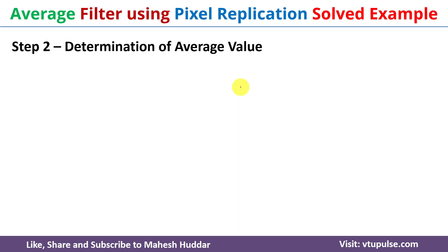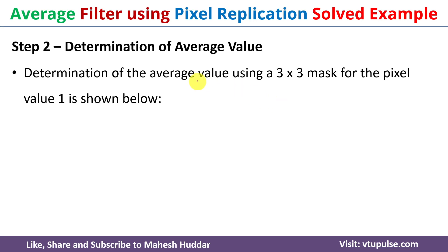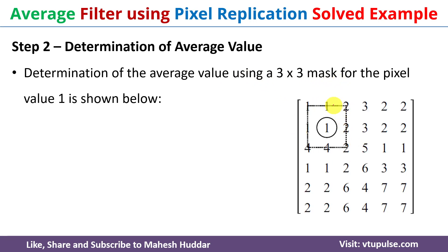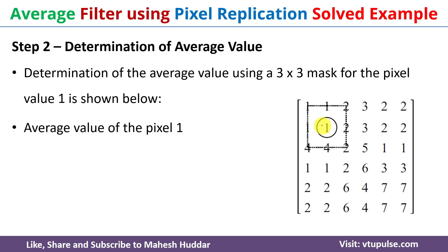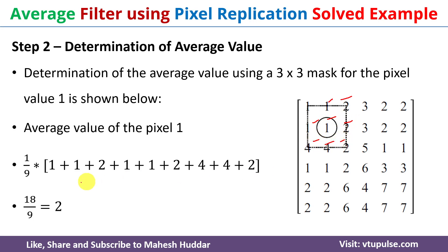Once we have padded the boundary values, the next step is to determine the average values. For pixel value 1, using the three cross three mask, we consider the three cross three matrix, add all nine values and divide by nine. So: 1+1+1+2+1+1+1+2+4+2 = 18, divided by 9 = 2. The average value for the first pixel becomes 2.